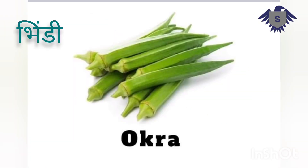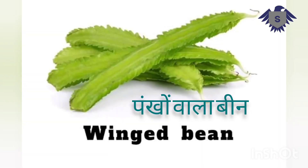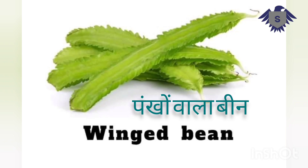Okra — Bhindi, also called Lady Finger. Peas — Matar. Wind Beans — Unkhon Wale Beans, which are a similar type of bean. Drumstick — Sahajan.